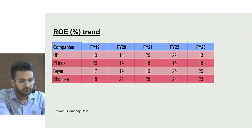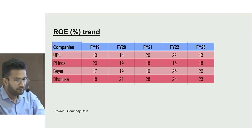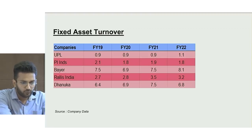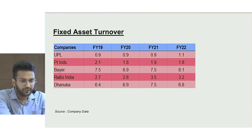Agrochemical companies generally enjoy healthy and stable return ratios compared with fertilizer companies, with limited government intervention and ROE of more than 15%, going as high as 25% in some years. On fixed asset turnover, asset-light companies like Bayer and Dhanuka have turnover as high as 7-8x due to outsourcing of formulation manufacturing, whereas PI and UPL have lower asset turnover due to backward integration in intermediates and technicals. Dhanuka AgriTech relies heavily on in-licensing molecules through tie-ups with global innovators.